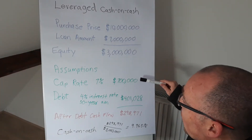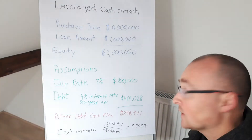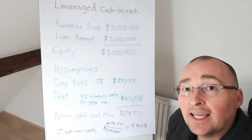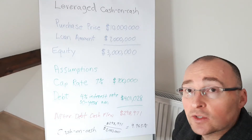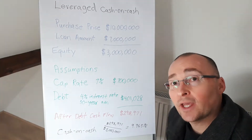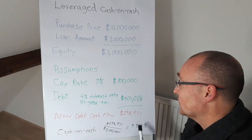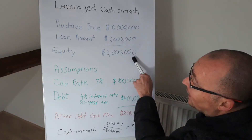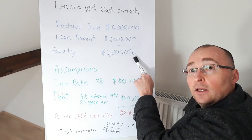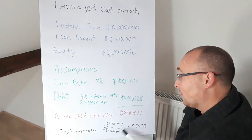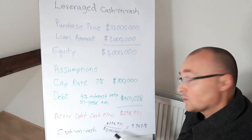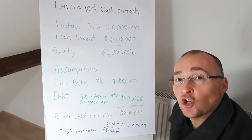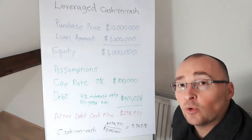When you subtract our NOI from our debt costs, you get an after-debt cash flow of $298,971. To determine your cash-on-cash return, you take the $298,971 and divide it by the original equity that you infused into the property to close. When you divide those two numbers, you see that your annualized return on a cash-on-cash basis is 9.965%.